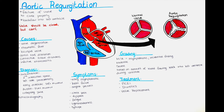Aortic regurgitation, also known as incompetent aortic valve, occurs when the aortic valve fails to close properly, allowing blood to flow back from the aorta into the left ventricle. Basically, when the aortic valve should be closed, it is not completely closed.